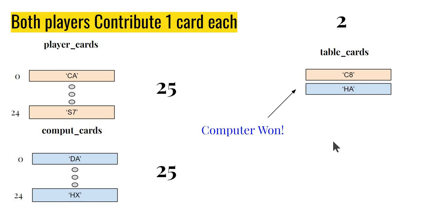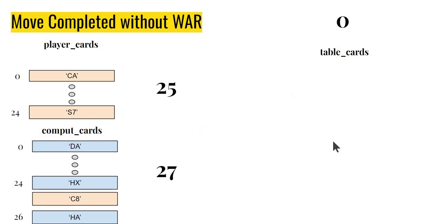Clearly, Ace is bigger than 8, and hence computer has won. The 2 table cards are going back to the computer, who puts them at the bottom of the pile. Notice at the end of this move, which completed without any war, player has 25 cards and computer now has 27 cards.